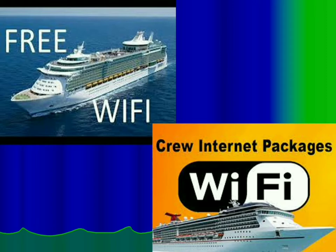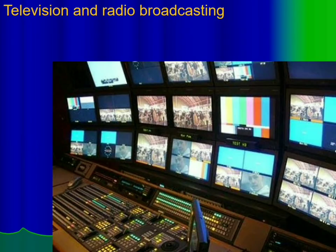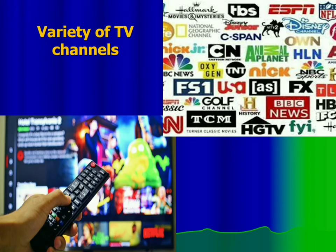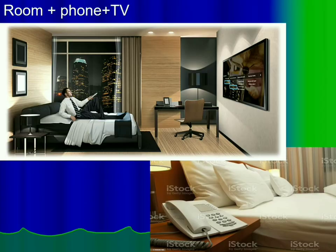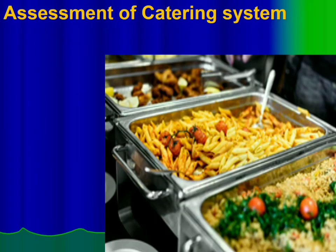A lot of tour companies offer in their tour packages different kinds of free Wi-Fi zones and free access to the internet. Another type of communication system is television, broadcasting, and radio broadcasting. A variety of TV channels are highly appreciated by guests because they speak different languages and prefer to watch channels in their own language. PC availability in each hotel room is also appreciated. Rooms should be equipped with phones and TVs, as we cannot imagine life without them.